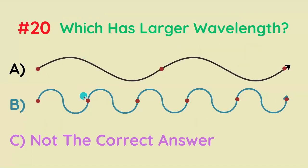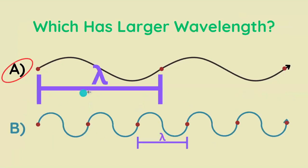Which of these two waves has a larger wavelength — A or B? It's going to be A, because the horizontal distance it takes for it to repeat itself is far longer than for this wave.